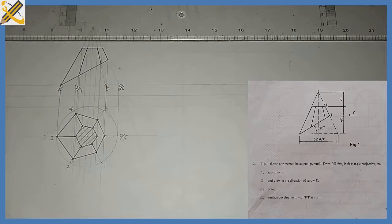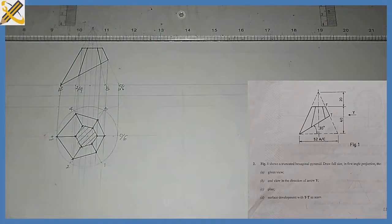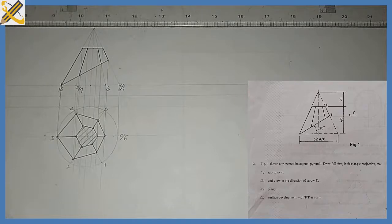Okay, so welcome back. We are going to look at plan and elevation, looking in the direction of arrow Y, which is towards this area. So how do we project the end view? What I'm going to do is from this edge here.